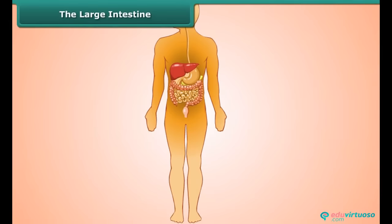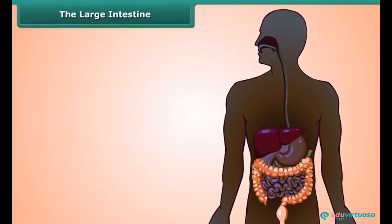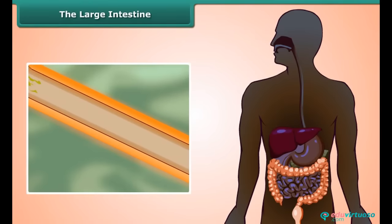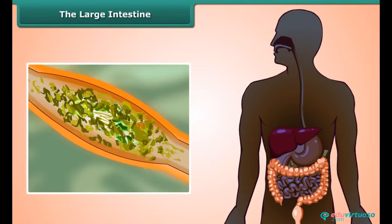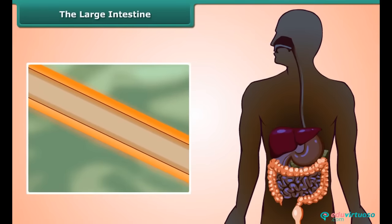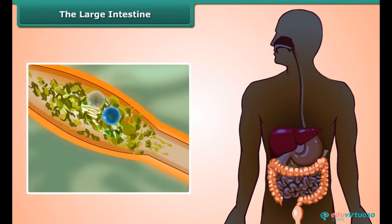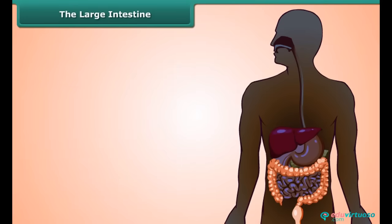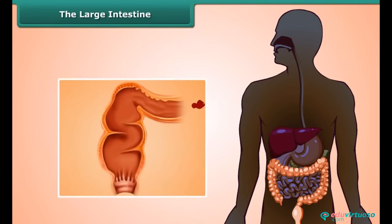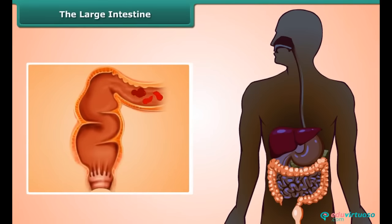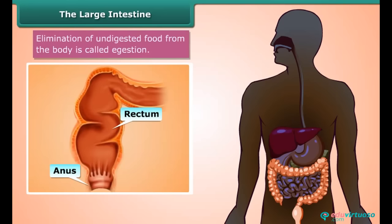When chyme enters the large intestine, it absorbs most of the water and some salts from the undigested food. This step is important because recovering water keeps us safe from dehydration. Once most of the water is gone, solid waste moves to the last part of the large intestine called the rectum, and the fecal matter is removed through the anus. This completes human digestion.